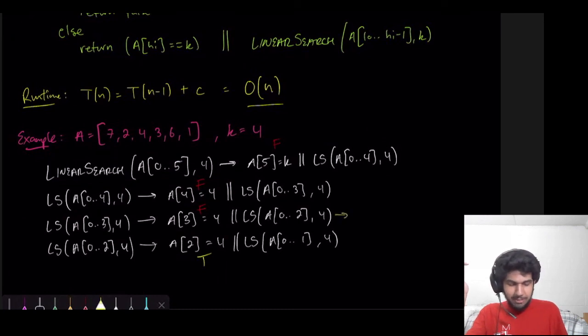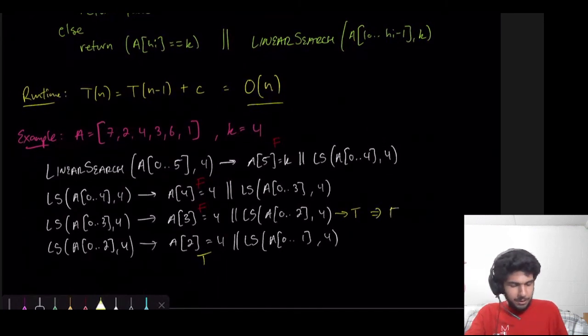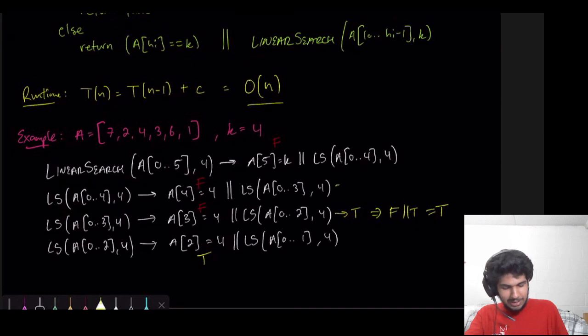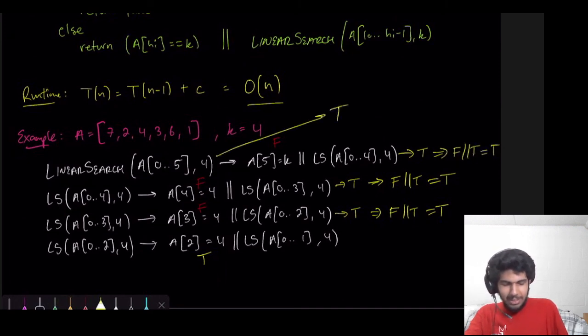Which means that this evaluates to true. False or true is equal to true. So, that means this evaluates to true. And, again, we have false or true. That's true. So, this evaluates to true. False or true equals true. So, that means, overall, our search returns true. We have found that 4 in our array. Which is great. So, that is what our recursive linear search method is doing.